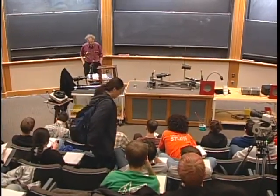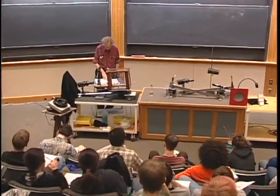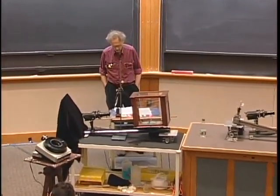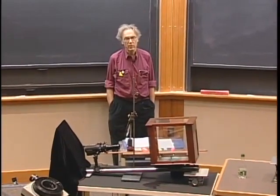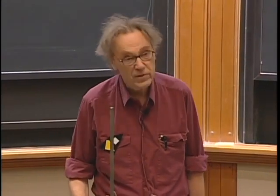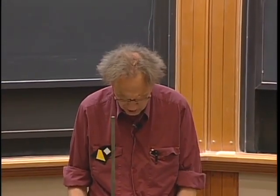Today we're going to talk about interference of electromagnetic radiation. I will start as a warm-up with the famous historical experiment first done by Young in 1801. By that time, the issue whether light was waves or particles was still unresolved. Newton always wanted light to be particles, but the Dutch physicist Huygens wanted them to be waves, and the issue was unresolved.